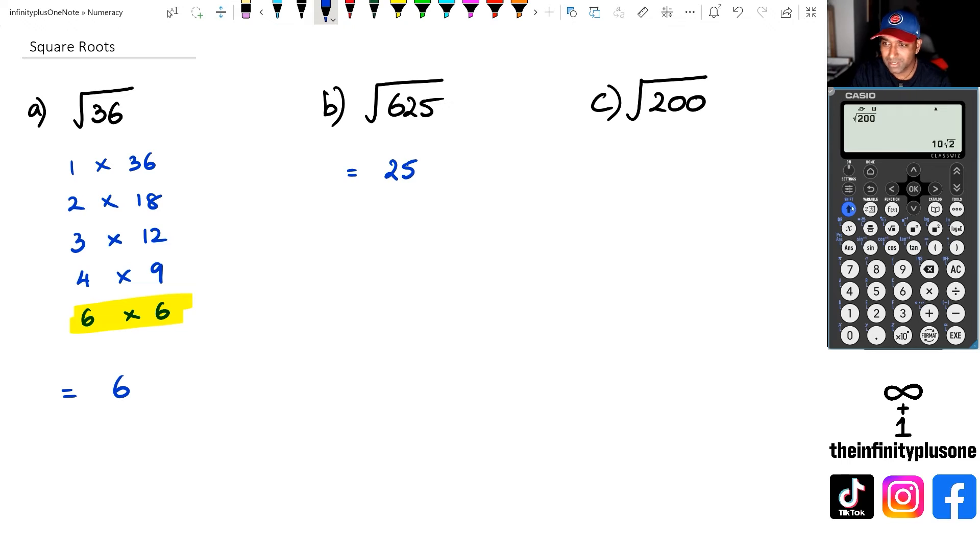Particularly if you do have this particular calculator, all you got to do is just click on shift and put equals again, and that's going to give you your decimal answer. Now obviously this is a number that's going to keep on going, so we're going to round it up to 14.14 or two decimal places.